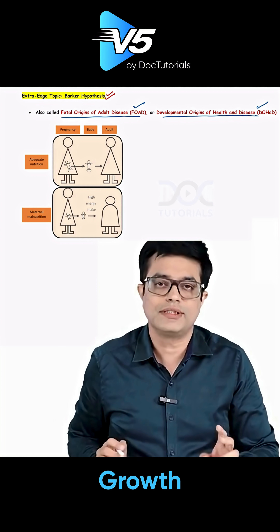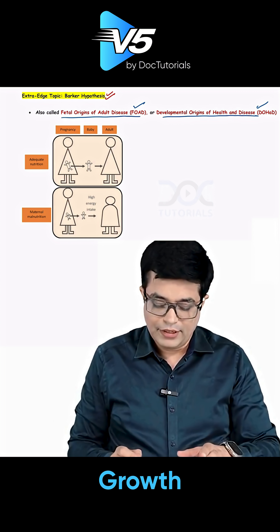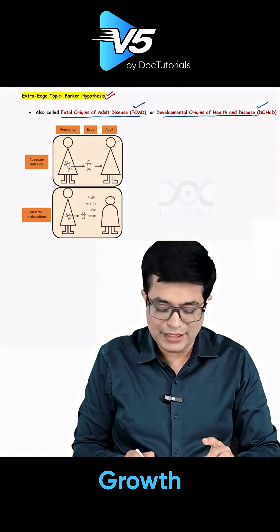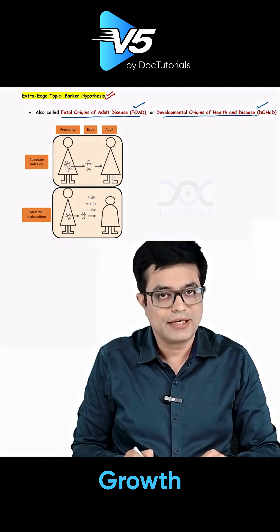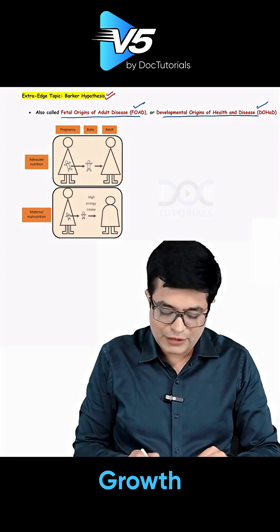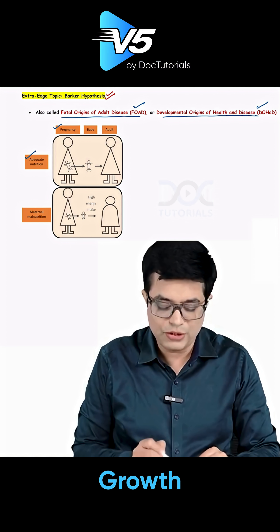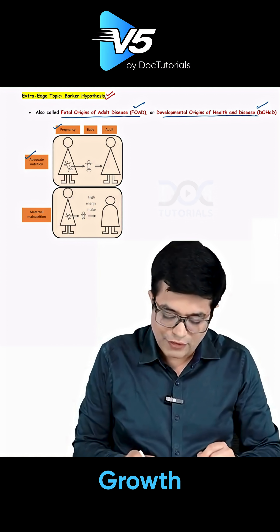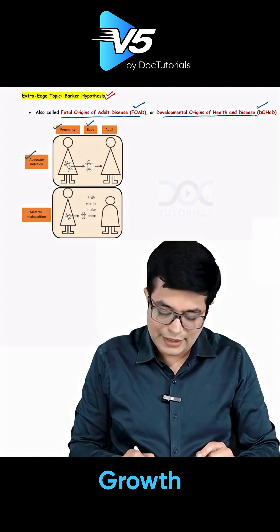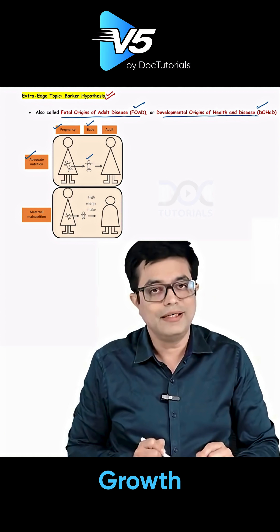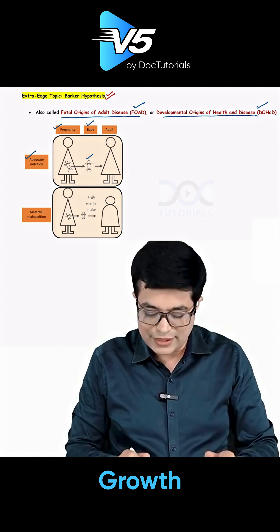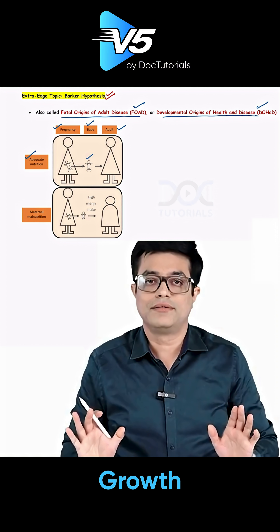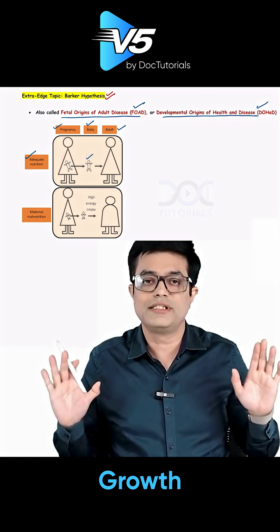What does Barker's hypothesis say? Look at the photograph. If there is a pregnant lady — this is the pregnant lady and this is the fetus — if this pregnant lady is given adequate nutrition, the fetus grows adequately. When the fetus is born as a baby, the baby will be healthy and this healthy baby will turn into a healthy adult. So no diseases will be there.